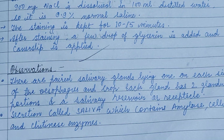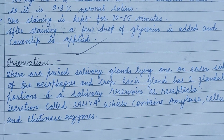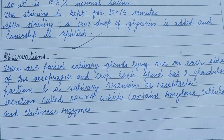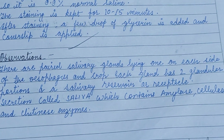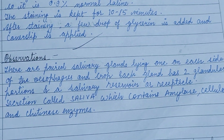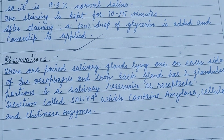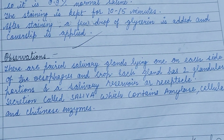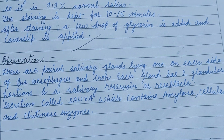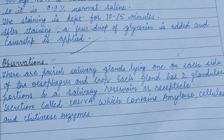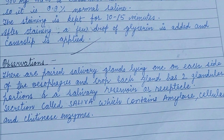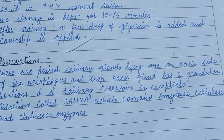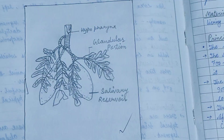The observation shows a pair of salivary glands lying one on each side of the esophagus and crop. Each gland has two glandular portions and a salivary reservoir or receptacle. The secretion, called saliva, contains amylase, cellulase, and chitinase enzymes.